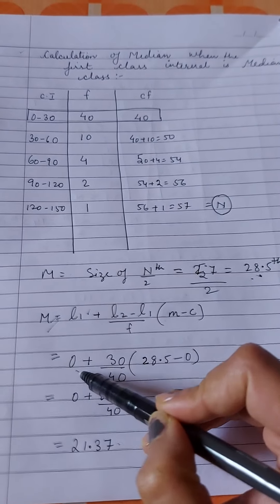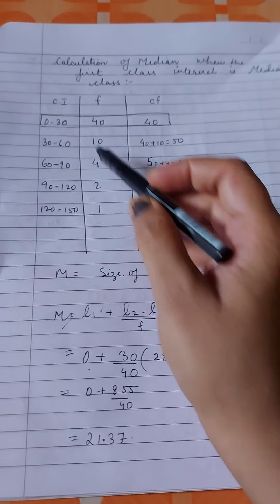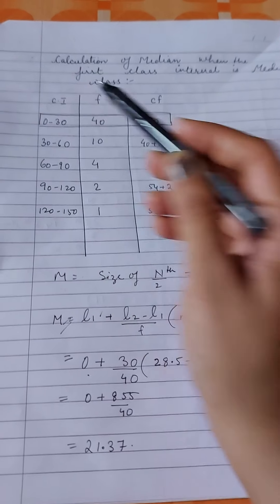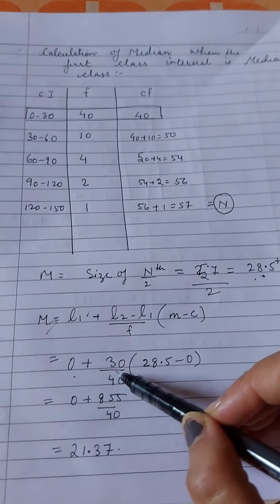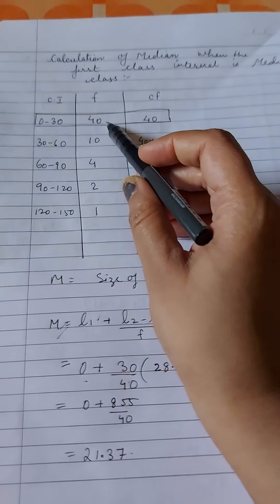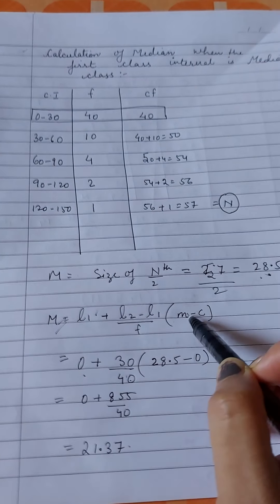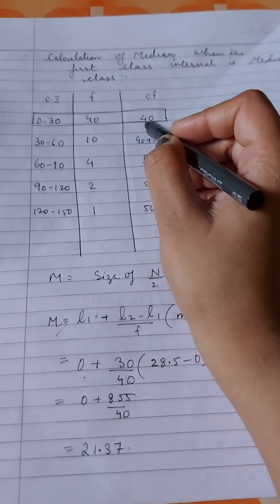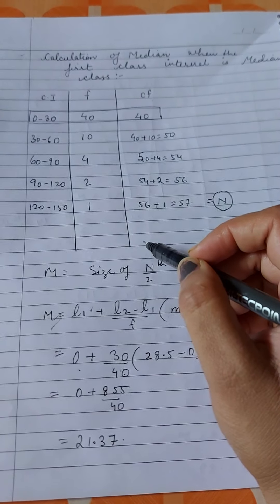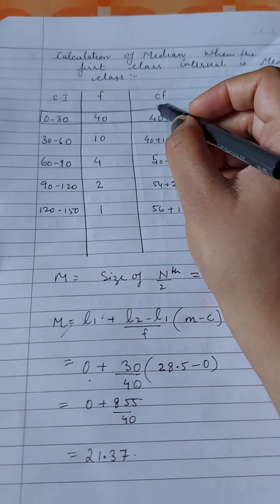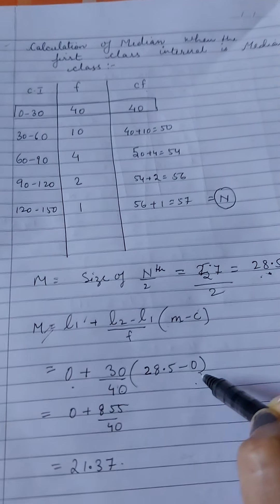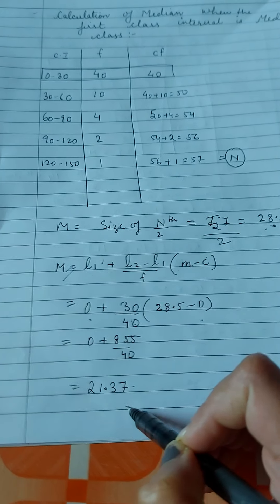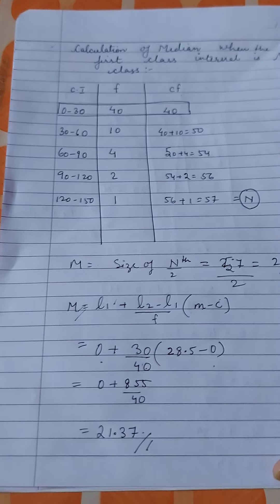So our lower limit will be 0. The gap between these two is 30, so L2 minus L1 is 30. Our frequency is 40, and m is 28.5, minus c is the number just above this. Here we don't have any number, so we put 0 here. When you calculate, the answer will be 21.37.